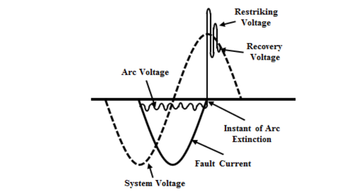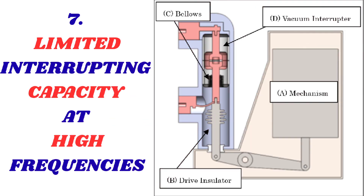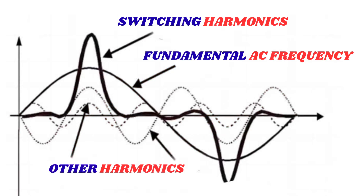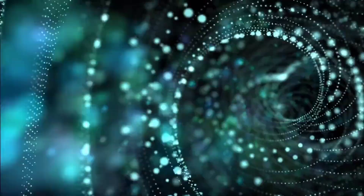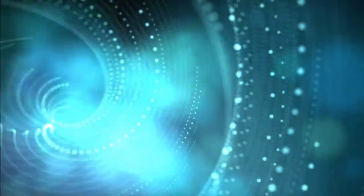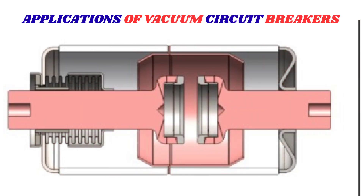The last drawback is limited interrupting capacity at high frequencies. VCBs may have limited interrupting capacity at high frequencies, making them less suitable for applications with high-frequency fault currents. This limitation is particularly relevant in applications with high-frequency harmonic content or switching transients. Despite these limitations, VCBs are widely used in medium-voltage applications due to their reliability, compact size, and low maintenance requirements.